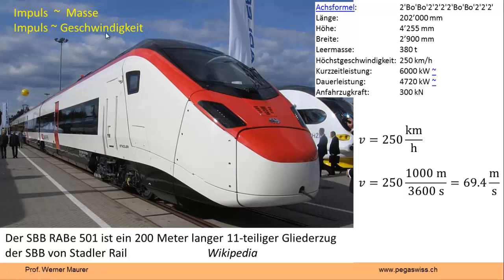Nun können wir uns fragen: Ist der Impulsinhalt einfach Masse mal Geschwindigkeit? Die Antwort ist ja, das ist so. Das hängt mit dem Einheitensystem zusammen. Das Einheitensystem ist gerade so gemacht, dass diese Formel möglichst einfach ist.